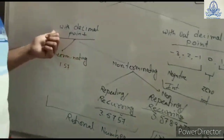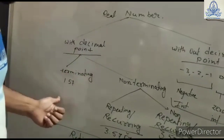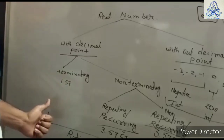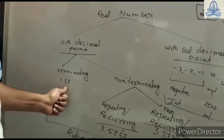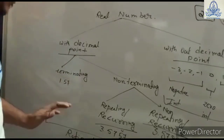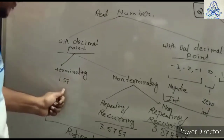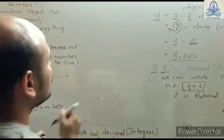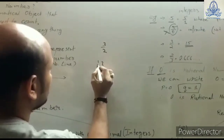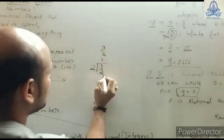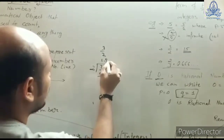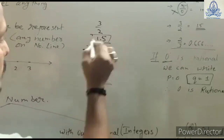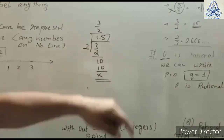Now, numbers with a decimal point have three parts. First, we talk about terminating decimals. If after the decimal point the numbers are limited — i.e., there are fixed decimal places — it is called a terminating decimal. For example, 3 divided by 2: we divide and get 1.5, and we terminate here. So 1.5 is a terminating decimal.